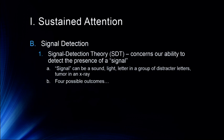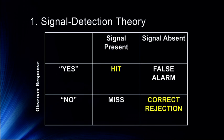Let's talk about the four possible outcomes in this kind of study. We have the observer's response — yes or no, they heard or saw something — and whether the signal was present or absent. When the person says yes and a sound is present, we call that a hit. When they say no but a sound is actually there, we call that a miss. When they say yes but there's nothing present, we call that a false alarm. And when they correctly say there's no sound present when there was none, we call that a correct rejection.